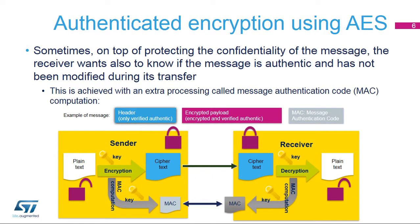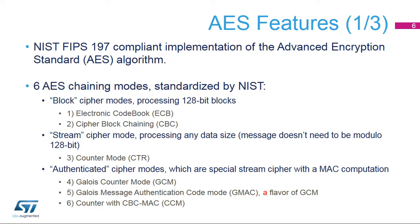Appending a message authentication code to the ciphertext enables the receiver to confirm that the message has been originated by the expected sender. The AES block is capable of generating the MAC along with data encryption. The National Institute of Standards and Technology, or NIST, develops Federal Information Processing Standards, or FIPS, publications specifying cryptographic standards.